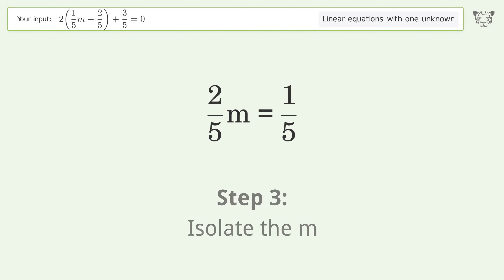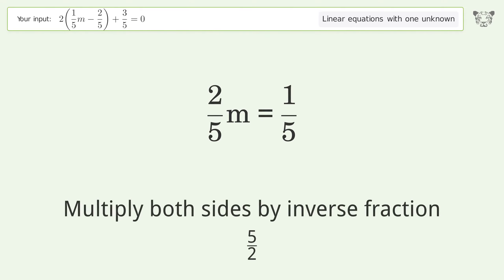Isolate the m. Multiply both sides by inverse fraction 5 over 2.